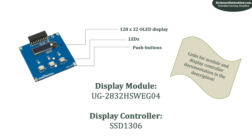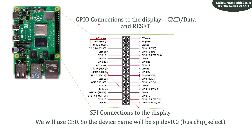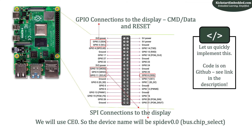Links to documentation and purchase are in the description. For the connections, we connect the SPI pins — Clock, MISO, MOSI, and Chip Select CE0 — on the Raspberry Pi. Since we are using CE0 and SPI bus 0, the device in software is /dev/spidev0.0. Note that this display does not support reads from the master, so we can skip connecting the MISO line. Also note the GPIO connections to the display: the command/data line and the reset line used to enable the display.